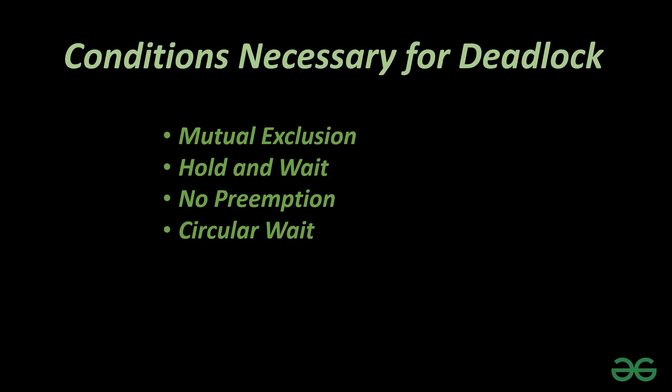In the previous example we saw a deadlock between only two processes — school and parents — but a real operating system deadlock can be complex and usually involves multiple processes and resources. Now we are going to study four necessary conditions for a deadlock to happen: mutual exclusion, hold and wait, no preemption, and circular wait.